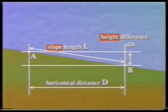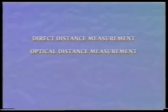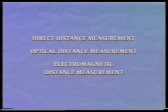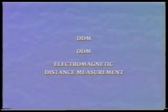Distances can be measured and set out in one of two ways: either directly in contact with the ground surface using tapes and chains, or indirectly above the ground surface using optical equipment or electronically operated systems. For convenience, these terms are usually shortened to DDM, ODM, and EDM.